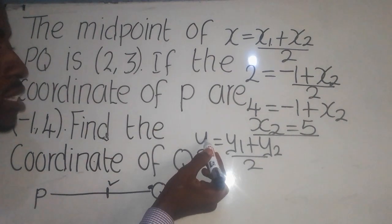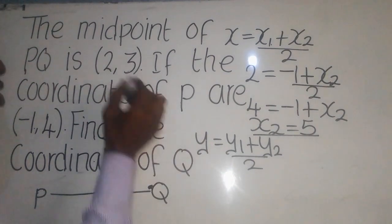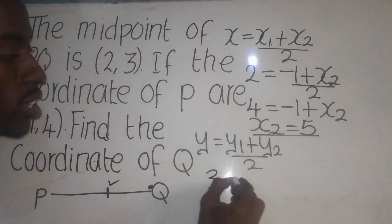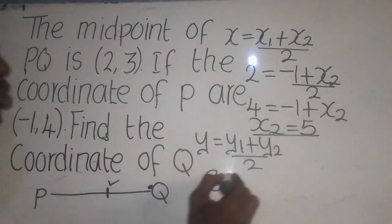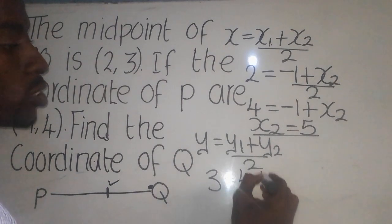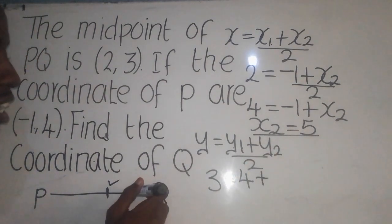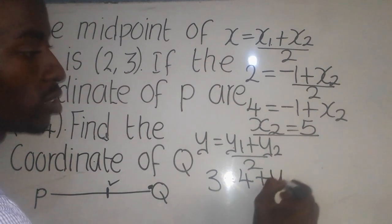So this Y simply means the midpoint for Y value, which is 3. So here you put a 3 equal to. What is Y1? Y1 is 4. So you put a 4 there. So plus Y2, which is here, we don't know. So you just have to leave it like that.